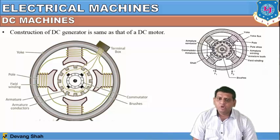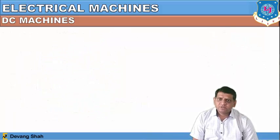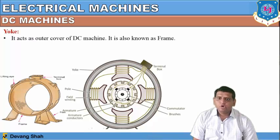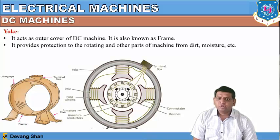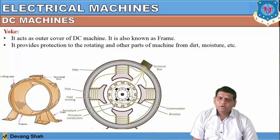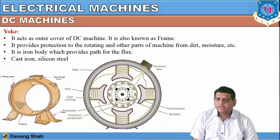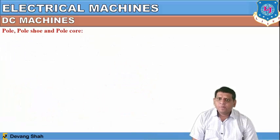Now we will discuss the individual parts of this construction. The first part is the yoke — the outer body of the DC machine. It acts as an outer cover, also known as a frame. It provides protection to the rotating and other parts of the machine from dirt, humidity, and other environmental parameters. It is an iron body which provides the path for the flux and is made up of cast iron and silicon steel.